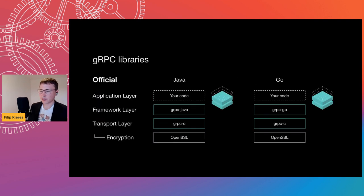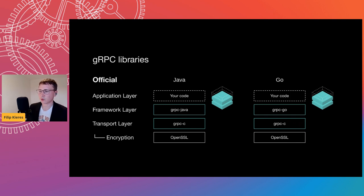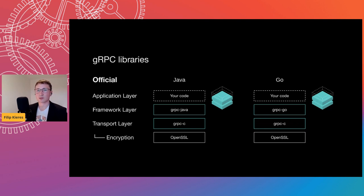Taking Java and Go for comparison — the most popular gRPC libraries — gRPC is split up into layers. At the very top is the application layer where your code lives. gRPC provides a framework layer, which is the library written in the language, such as gRPC-Java or gRPC-Go. Then there's a transport layer written in C — a full implementation of the HTTP/2 protocol including multiplexing. Java and Go call this C layer over an ABI. The encryption layer is optional, but you can encrypt your entire communication out of the box, using either OpenSSL or BoringSSL, the OpenSSL fork maintained by Google.